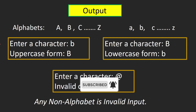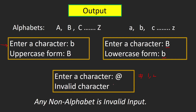Our output screen will look like this: we will be asked to enter a character. If we enter small 'b', our program should convert it into capital 'B'. Similarly, if we enter capital 'B', the program should output small 'b'. If we enter any invalid character like '@', '#', or a digit, we should get the output 'invalid character', since these characters cannot be converted into uppercase or lowercase.